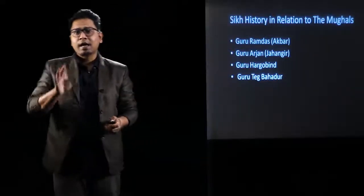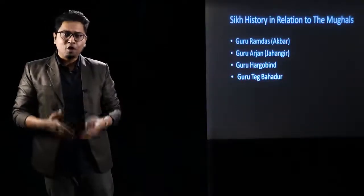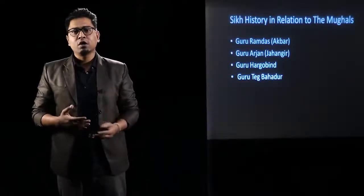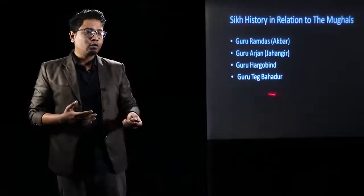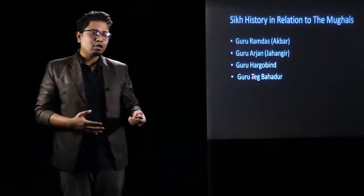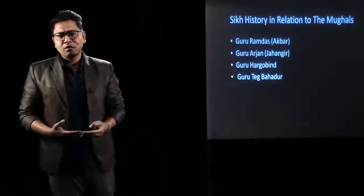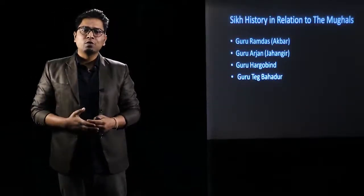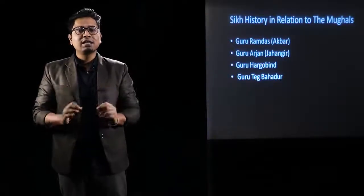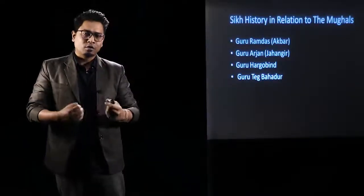Guru Teg Bahadur was executed by Aurangzeb — he was brought to Delhi, asked to convert, and executed. The dispute was over the conversion of Kashmiri Brahmins; Guru Teg Bahadur wanted to confront the Mughal emperor on this issue. Lastly, with Guru Gobind Singh, the Sikh Khalsa was established and the complete militarization of the Sikhs took place.